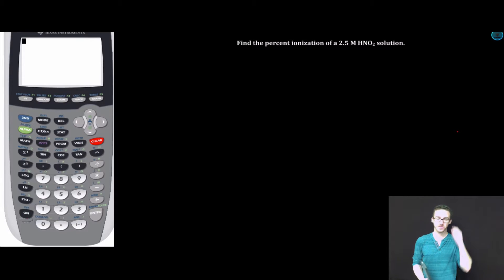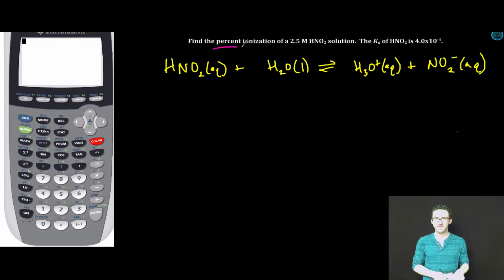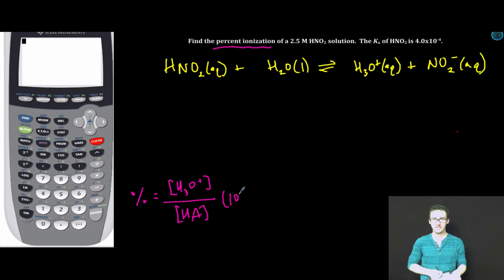All right, let's just take a quick minute to work through an example to hopefully help clarify this idea of percent ionization. We've got a 2.5 molar nitrous acid solution. First thing I'm going to do is write the equation for that nitrous acid with water. We're looking for the percent ionization. And the formula for percent ionization for a weak acid is the concentration of the hydronium ion over the initial concentration of our weak acid. In this case, HNO2 times 100.